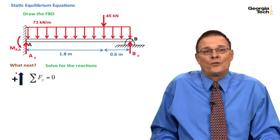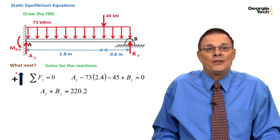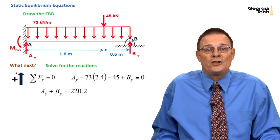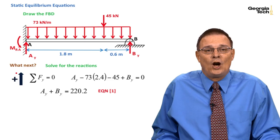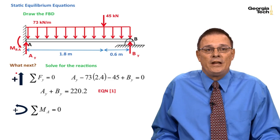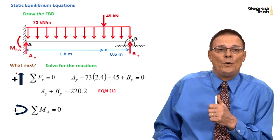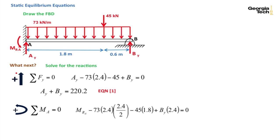If we sum forces in the Y direction, we can solve for an equation which relates A_Y and B_Y. We'll call that equation one. And then if we sum moments about point O and set it equal to zero, we come up with a second equation. It's in terms of the moment reaction at point A and B_Y.